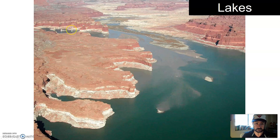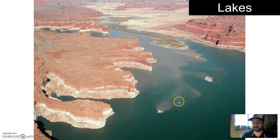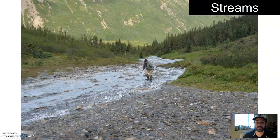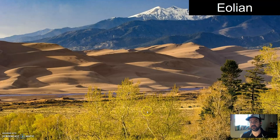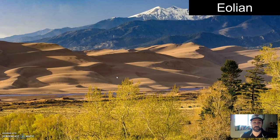As streams enter lakes, the stream water slows down and that sediment gets deposited — you can see the tannish sediment starting to deposit. Streams usually carry bigger pieces of sediment, and along the edges where the water slows down, you'll get deposits. Eolian environments — windy environments — can pile up sediment as well, often in sand dune-type formations.